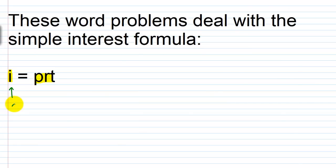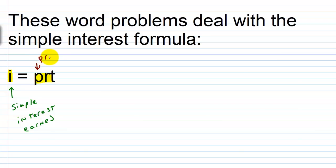i is the simple interest earned. p stands for the principal — that's the amount you invest in something. Then r is going to be your rate, your interest rate, and it's expressed as a decimal when we're working with this formula. A lot of times when you get your problem it's given to you as a percentage, so you need to be able to convert back and forth to use this formula correctly.